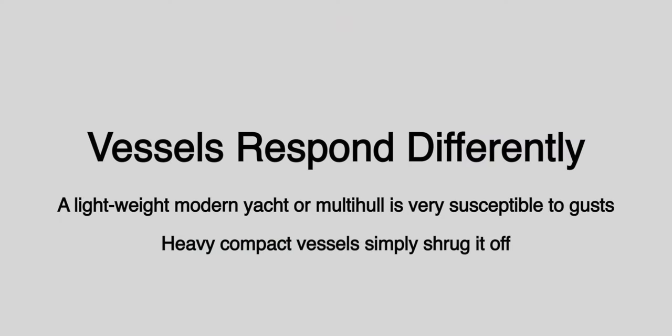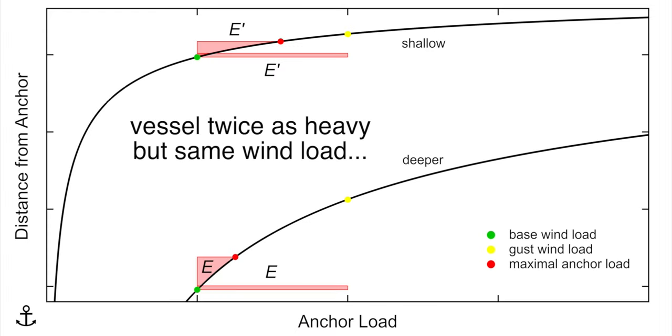Vessels respond differently to the dynamic loads caused by strong gusts or swells. For a vessel twice as heavy but still having the same wind load, the effect of a strong gust is much reduced.